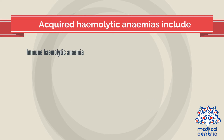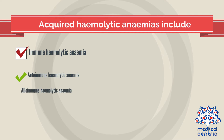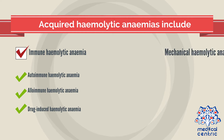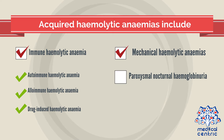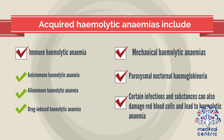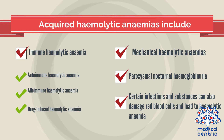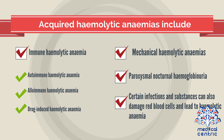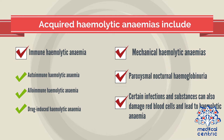Acquired hemolytic anemias include immune hemolytic anemia, autoimmune hemolytic anemia, alloimmune hemolytic anemia, drug-induced hemolytic anemia, mechanical hemolytic anemias, and paroxysmal nocturnal hemoglobinuria. Certain infections and substances can also damage red blood cells and lead to hemolytic anemia.